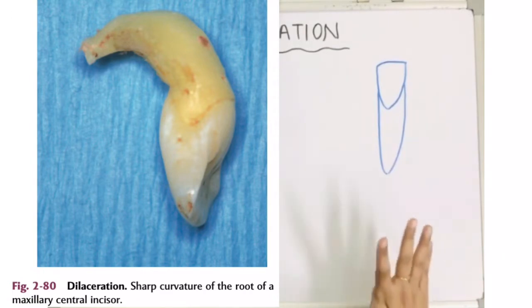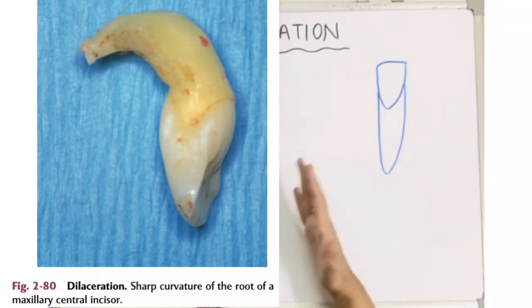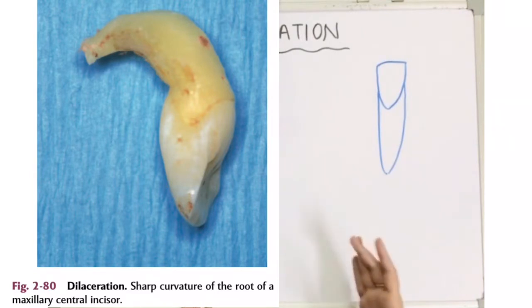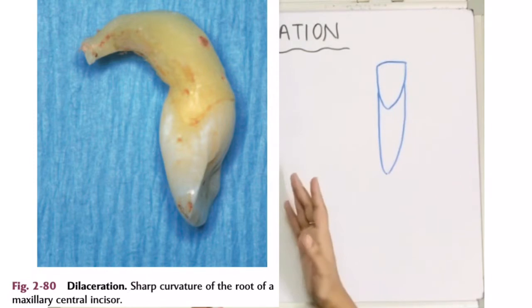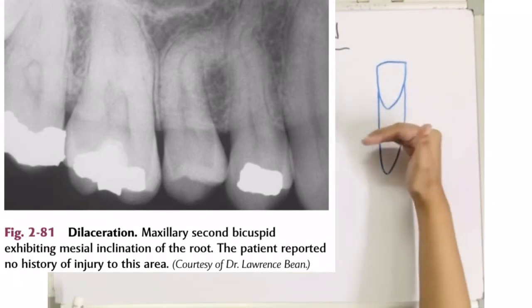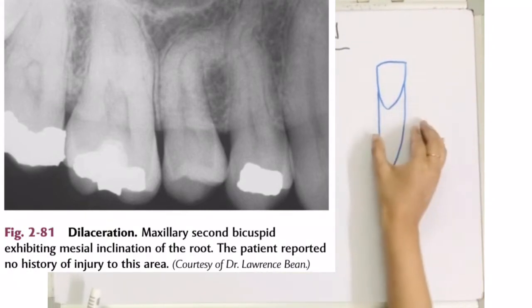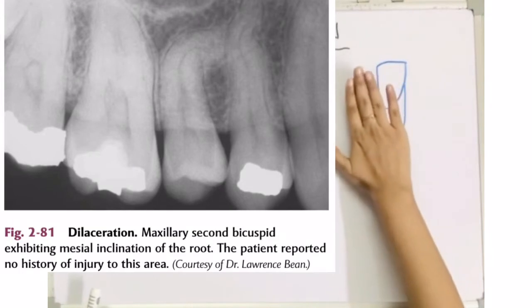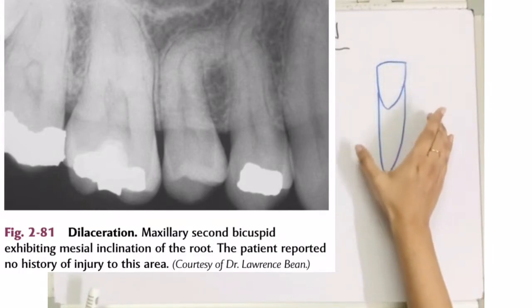So if we talk about its etiology, first of all it is an idiopathic condition, it is not known. Secondly, sometimes what happens is during the development of tooth, due to any trauma, if the patient has any trauma, then because of any injury there is displacement. If half of the tooth is developed, then this half of the tooth gets displaced.